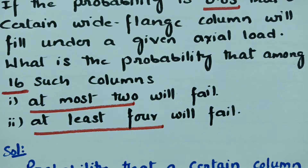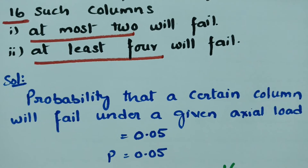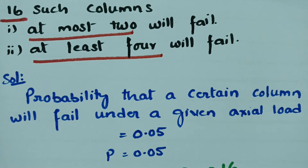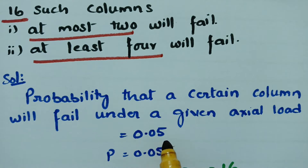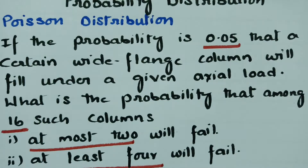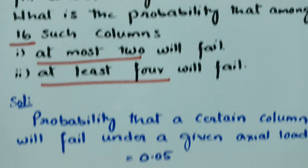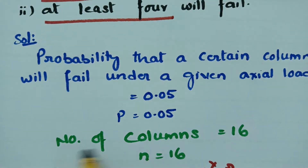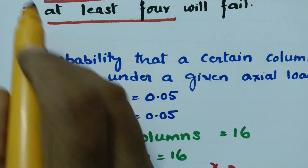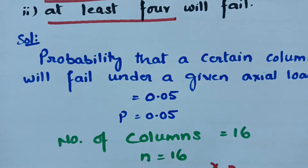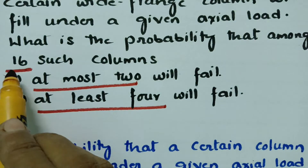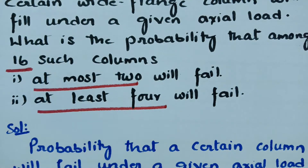There are two questions here: at most 2 and at least 4. First of all, what is given? The probability that a certain column will fail under a given action load is 0.05. So P is equal to 0.05, and the number of such columns is 16, so n is equal to 16.